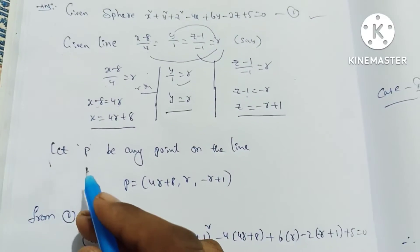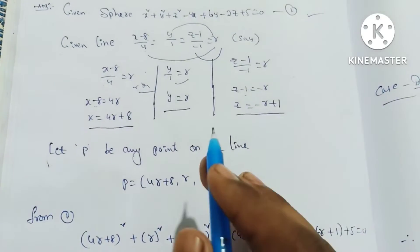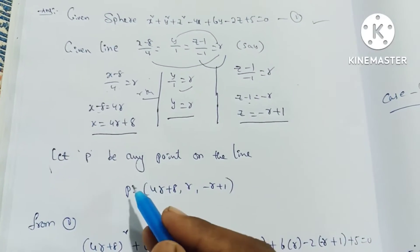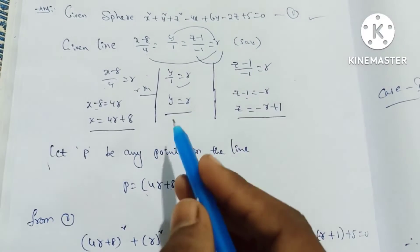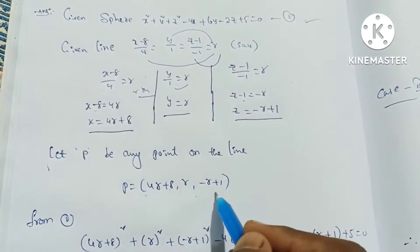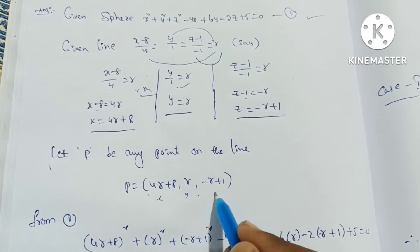Let P be any point on the line. P is equal to the point: 4r plus 8, r, minus r plus 1. This is x, this is y, this is z.